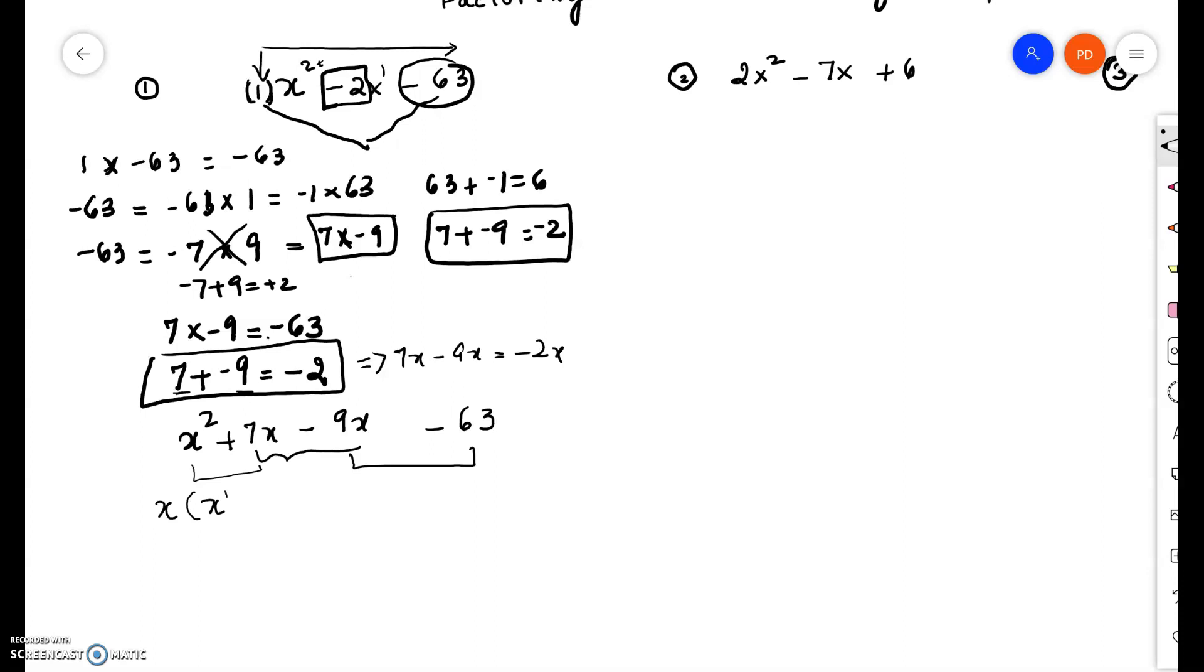Now when you work backwards, if you go x times x, it has to equal x squared. So now if we factor x out of positive 7x, we get positive 7. Now think about multiplying this back. Remember that we should get back x squared plus 7x.